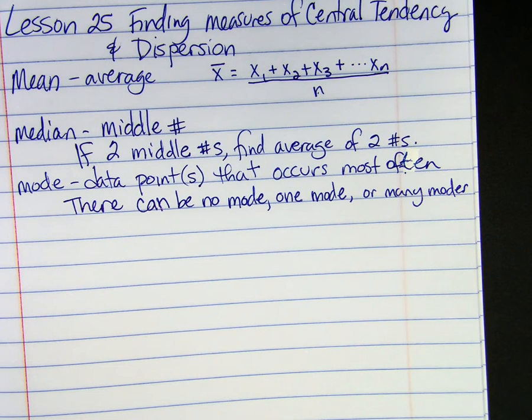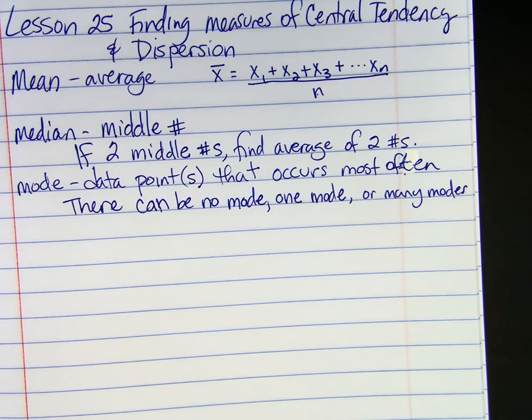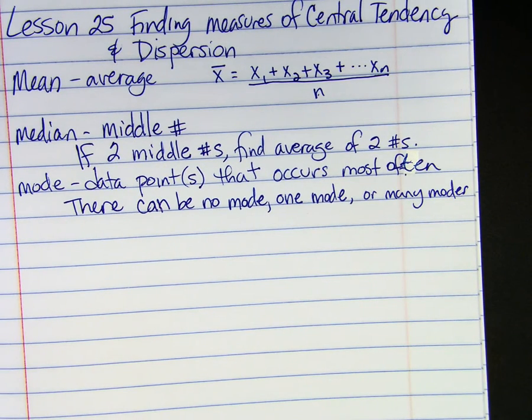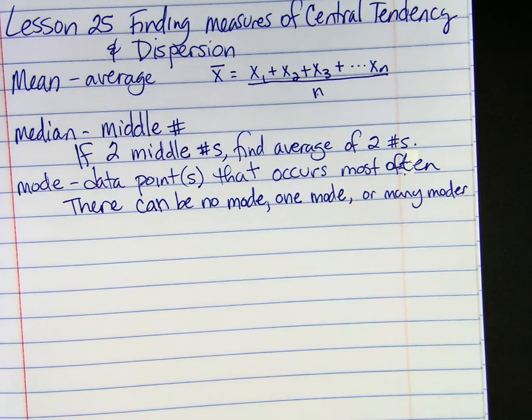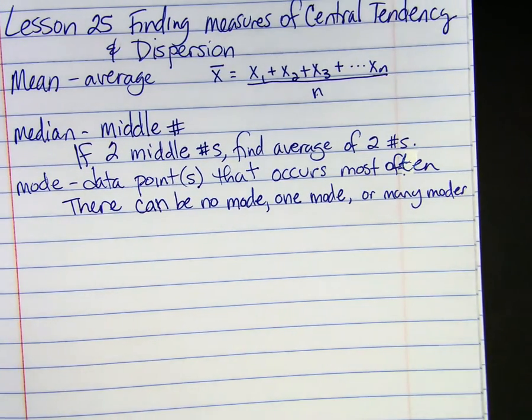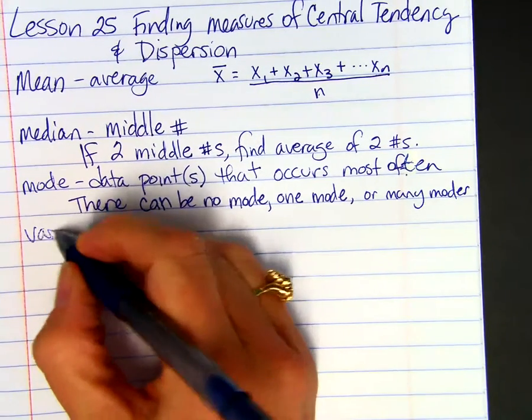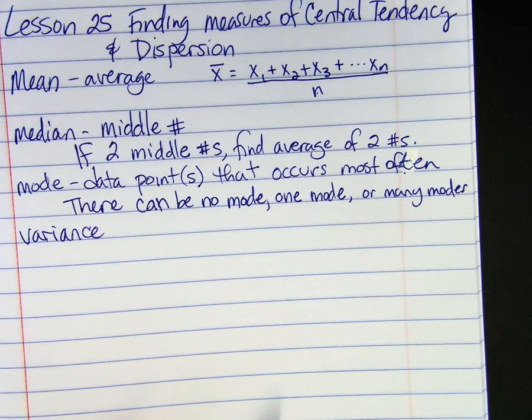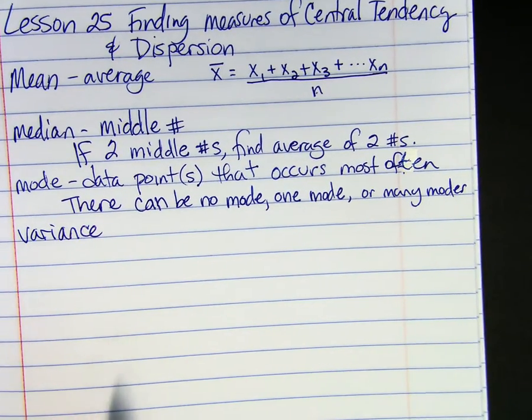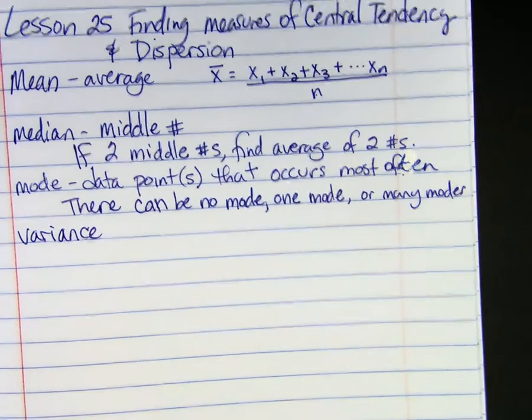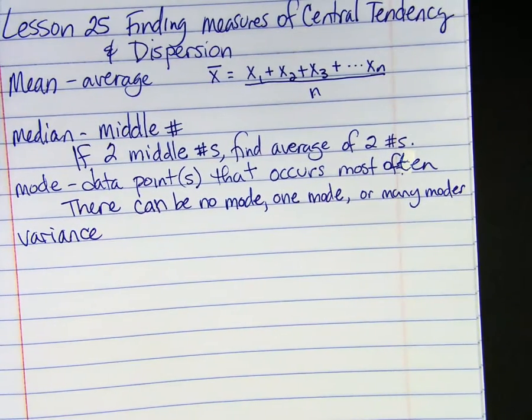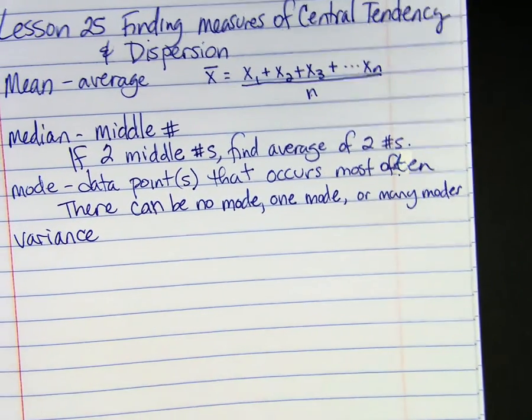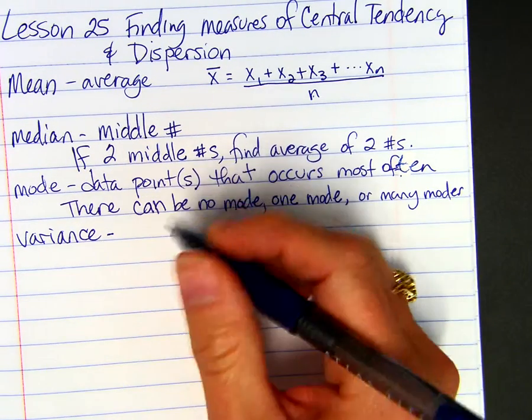Could everything except for one data point be the mode? Yes. If one of them does not occur with the same frequency as all the rest, then that one would not be the mode and all the rest would be. Spencer? This will probably never happen, but if they gave us a list of numbers and only one number, would the mode just be that number? No, there would be no mode. So if you don't have one higher than another, then it's just no mode.